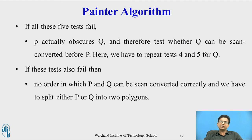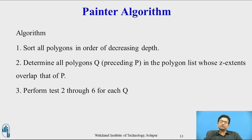The idea behind splitting is that a split polygon may not obscure another polygon. This is how the algorithm works — there are basically three steps. Step 1: sort the polygons in the order of decreasing depth. Step 2: determine all polygons Q preceding polygon P in the polygon list whose z-extents overlap that of P — that is, we need to determine all polygons whose z-extents overlap.